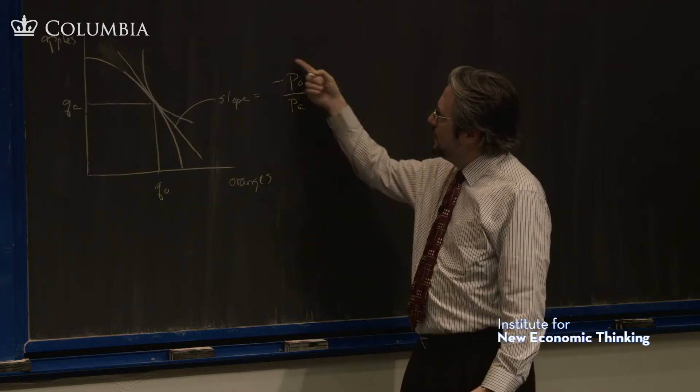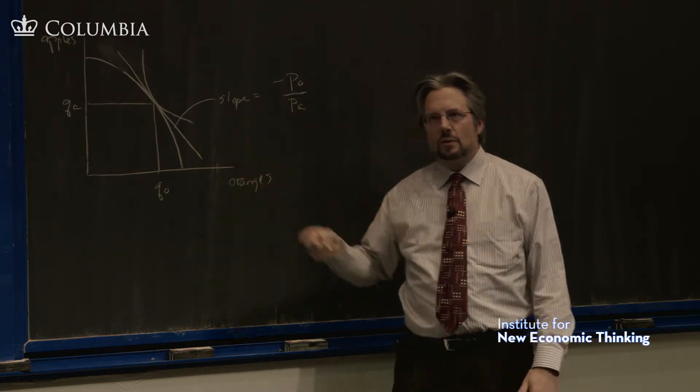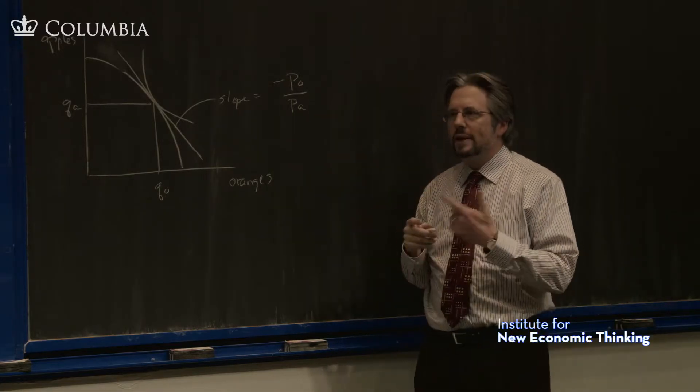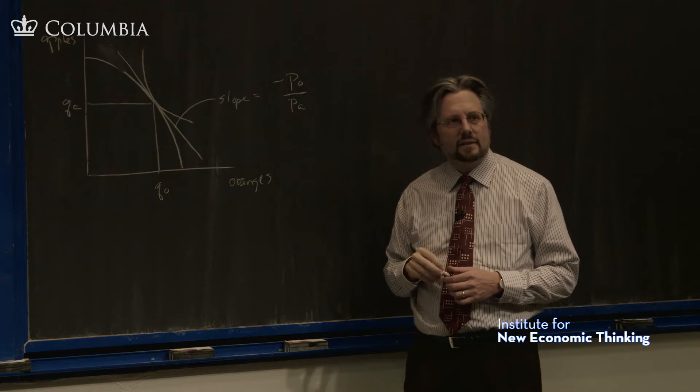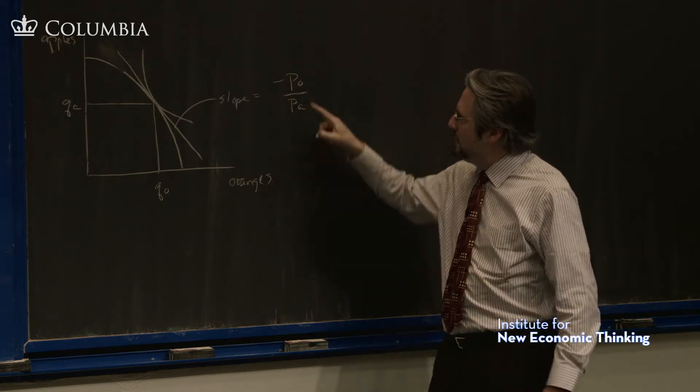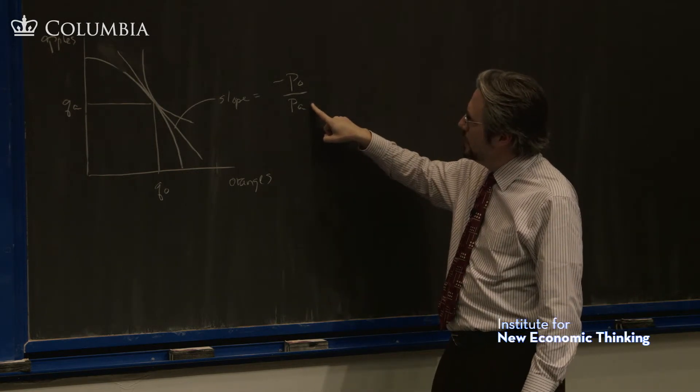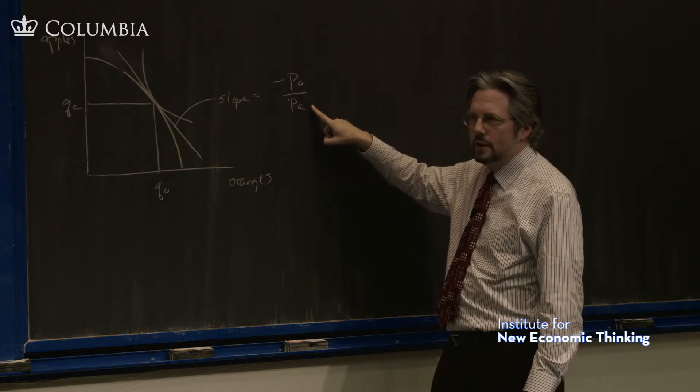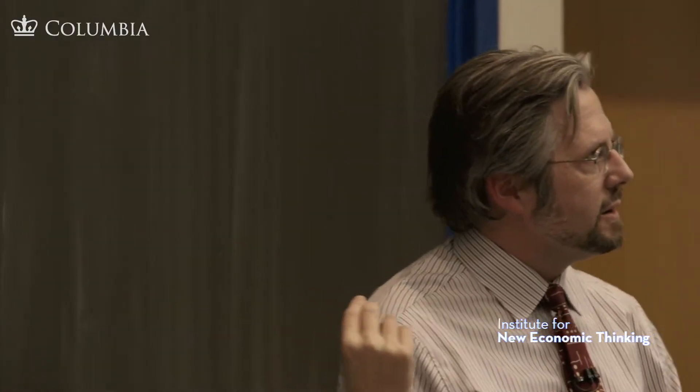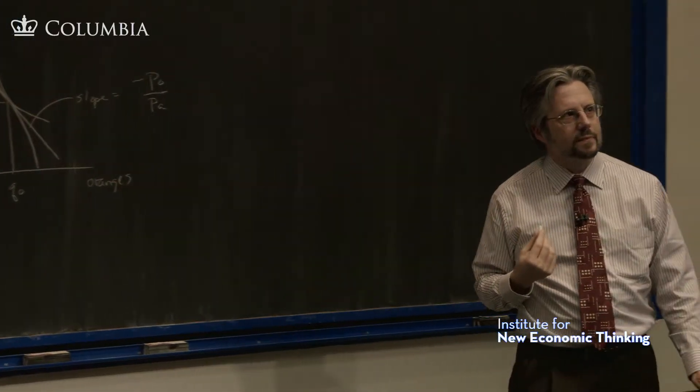The second thing is, look, the price that gets determined in this story is a relative price. It's the ratio of the price of oranges and apples, and we don't know what the absolute price level is at all. The P.O. could be 10, this could be 20, this could be 100, this could be 200, and it's all the same. There's no story in here about the absolute price level.